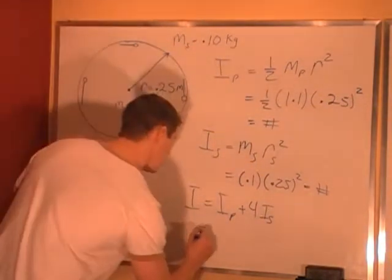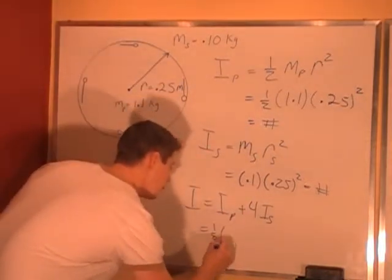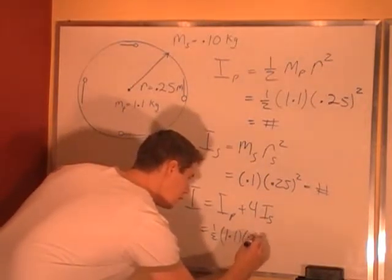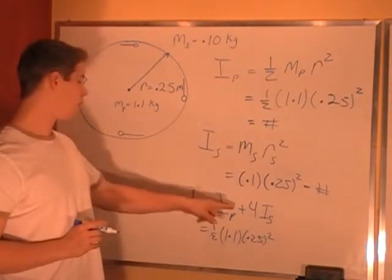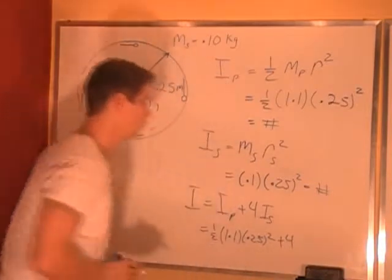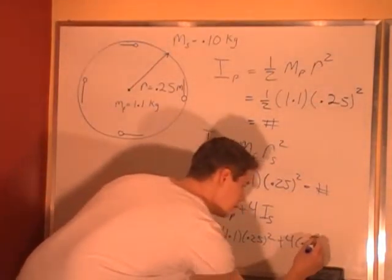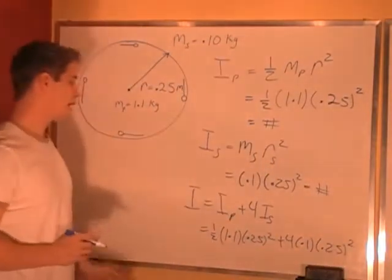So we plug in the numbers we have for I platter which is 1/2 times 1.1 times 0.25 squared and we add on 4 times I s plus 4 times 0.1 times 0.25 squared.